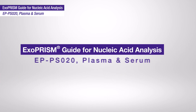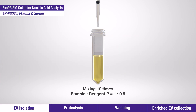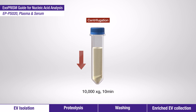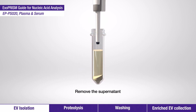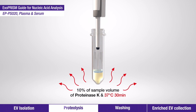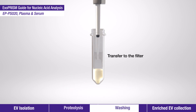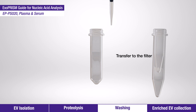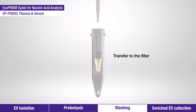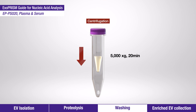This is the workflow of plasma and serum extracellular vesicle isolation for nucleic acid analysis. When reagent P is mixed with a sample in a guided ratio, the ionic condition in the mixture solution changes to coagulate extracellular vesicles, and they form a precipitate by centrifugation. The supernatant containing plasma proteins is removed, and the extracellular vesicle pellet is resuspended with reagent Q. The resuspended solution is treated with proteinase K to remove the protein corona surrounding the extracellular vesicles and remaining proteins. Then it is centrifuged to filter out things other than extracellular vesicles.